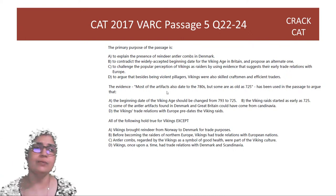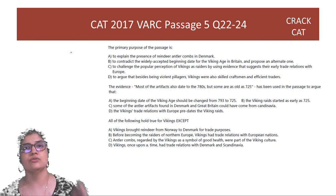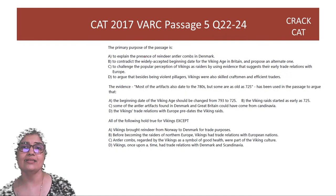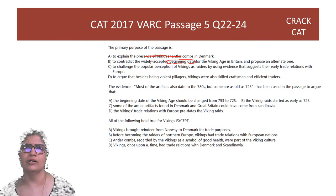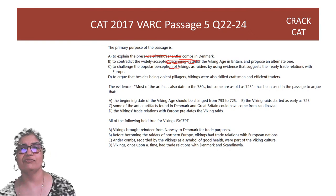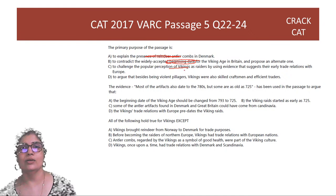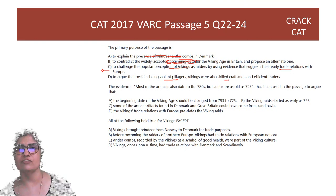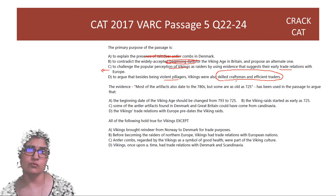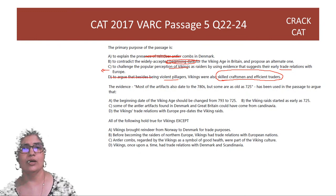Question: What is the primary purpose of the passage? These Vikings used to trade before they became plunderers. Option A — explaining presence — is wrong; it's a cause, not an effect. Option B — contradicting the beginning date — is wrong; there's no date contradiction. Option C — challenging the popular perception of Vikings as raiders by using evidence of early trade relations — is the best answer. Option D mentions efficiency which is not spoken about. The answer is option C.